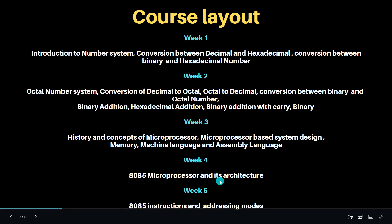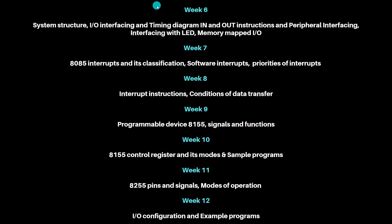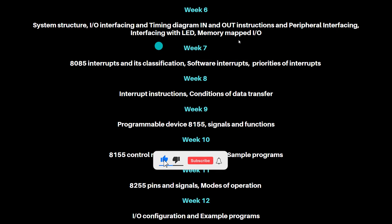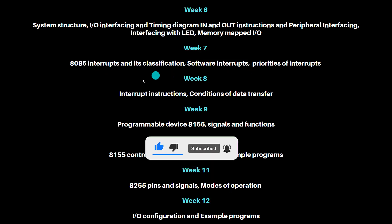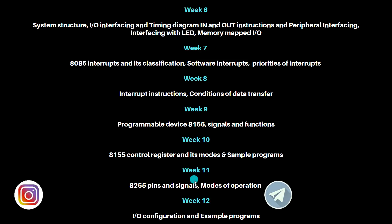In the fourth week you will learn about the 8085 microprocessor and its architecture. The fifth week covers 8085 instructions and addressing modes. The sixth week covers interface timing diagrams and peripherals. The seventh week covers interrupts and their classifications. The eighth week covers interrupts, instructions, and conditions of data transfers. The ninth week covers programmable device 8155 signals and modeling simple programs.